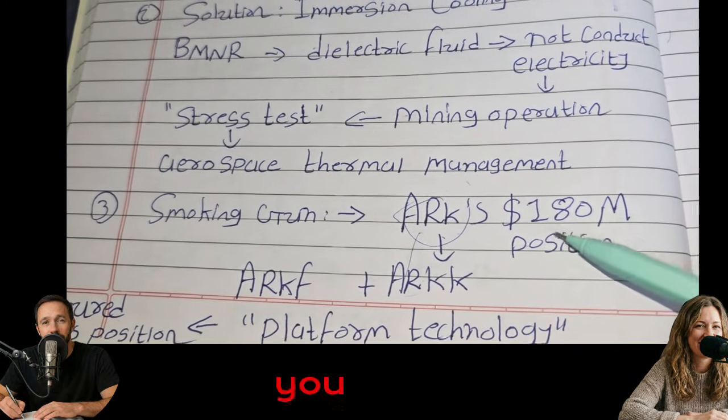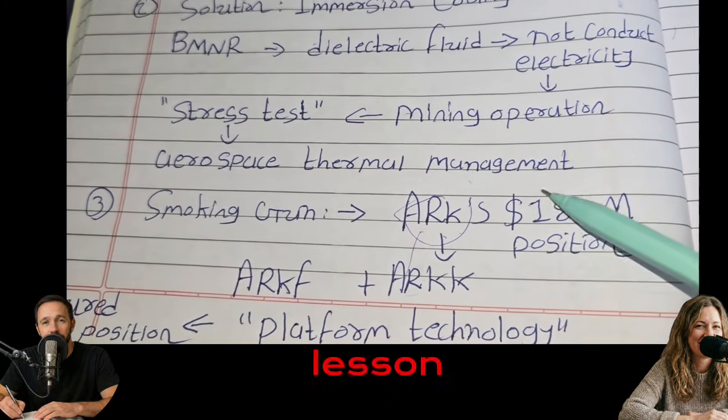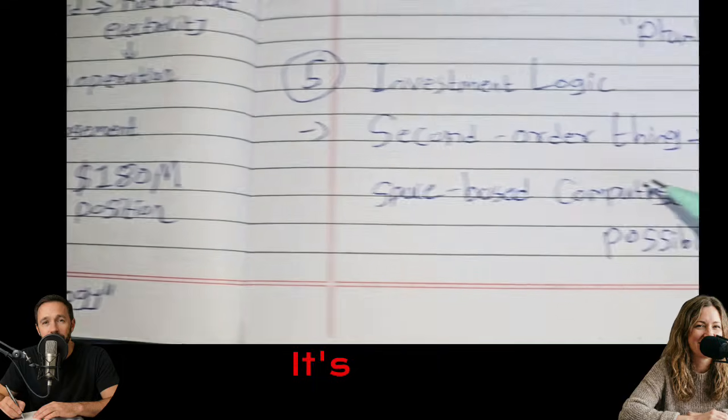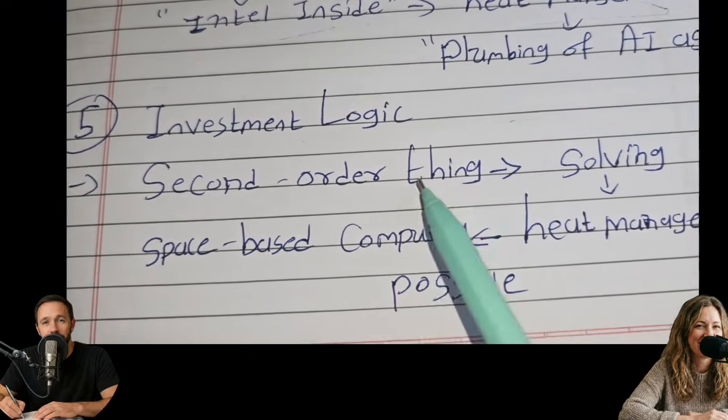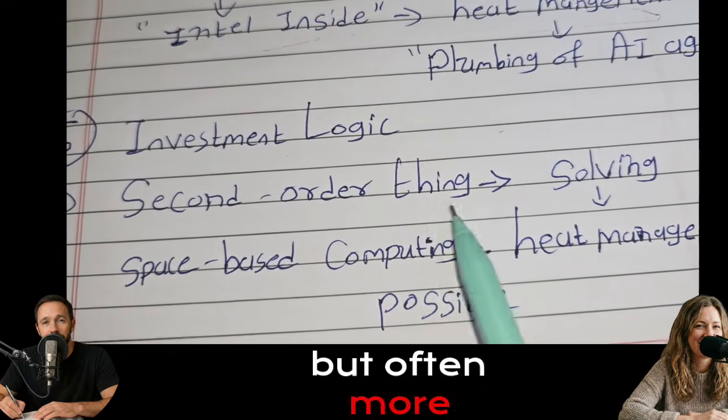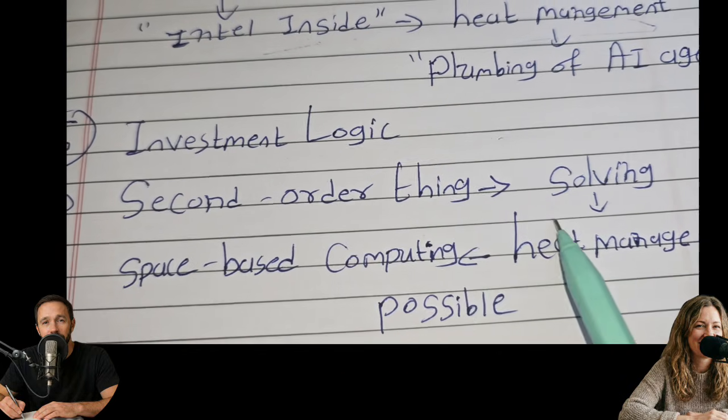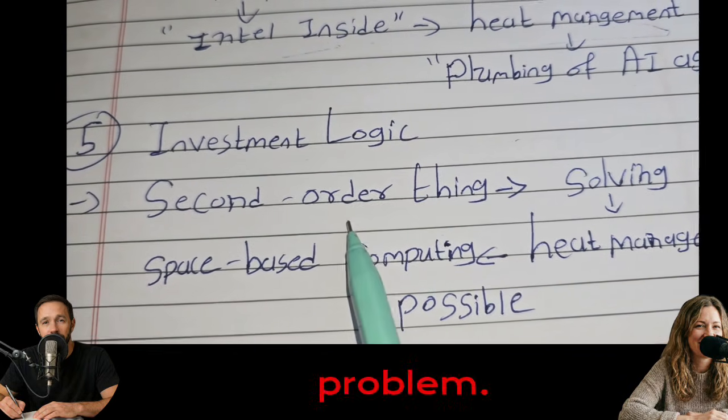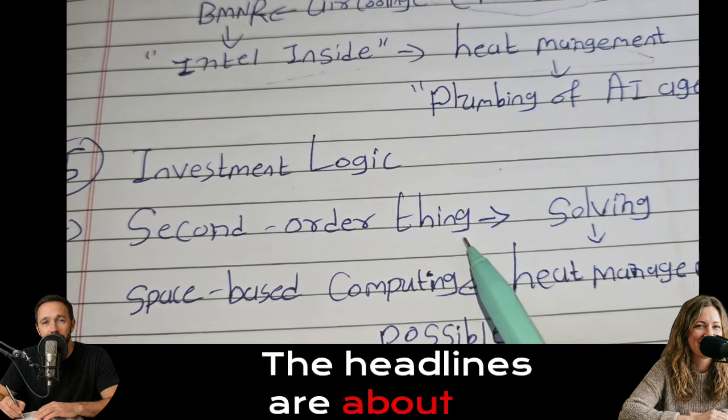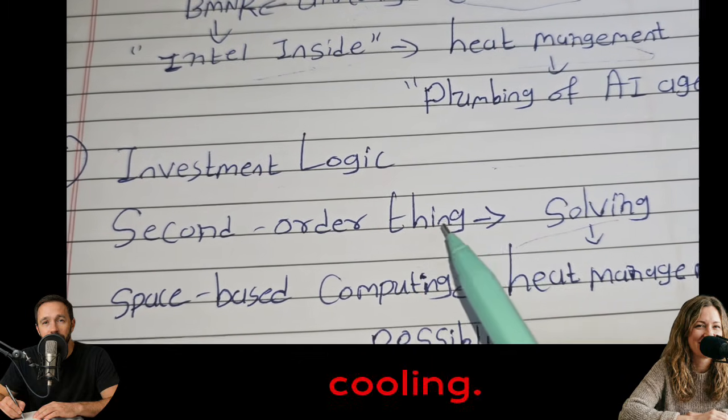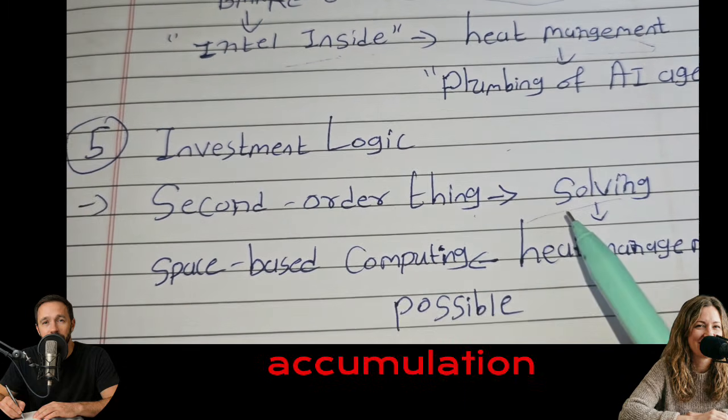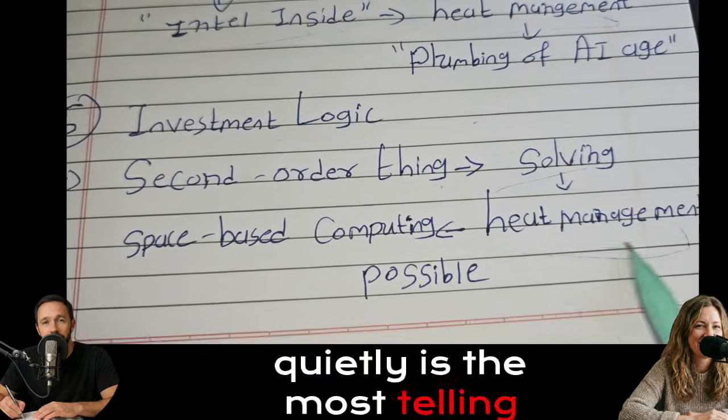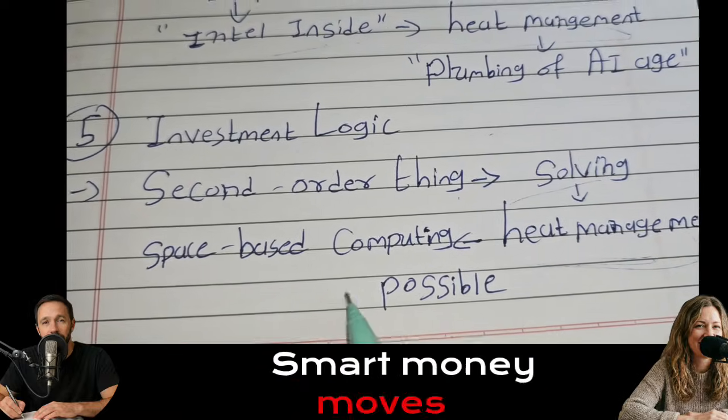For our listeners, for you out there, this is such a classic lesson in second-order thinking. It's easy to look at a rocket landing and say, I want to invest in that. It's much harder, but often more profitable, to ask, what problems does that rocket create? The rocket creates a heat management problem. Who solves that? The headlines are about the fire. The money is in the cooling. And the silence. The fact that this accumulation happens so quietly is the most telling part of this whole thing. Smart money moves in silence.